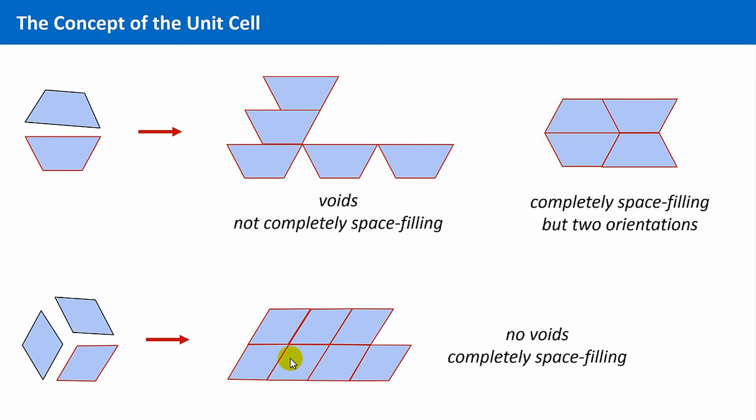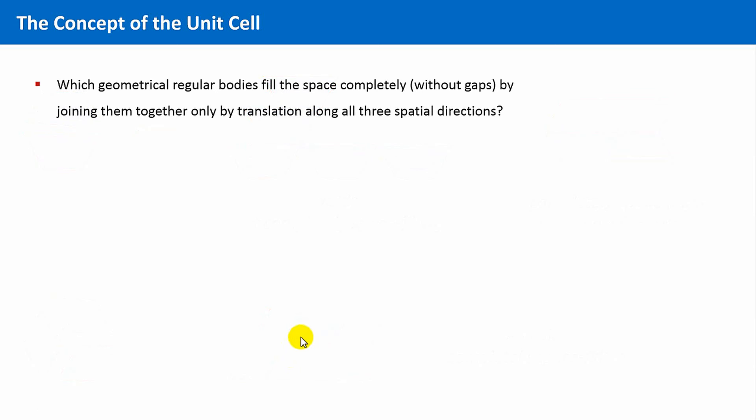Okay, and now we are able to generalize the concept of the unit cell. Namely, by finding an answer to this question. Which geometrical regular bodies fill the space completely, this means without remaining voids, by joining them together by translation only, along all three spatial directions?